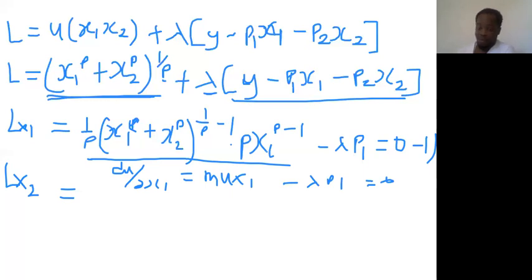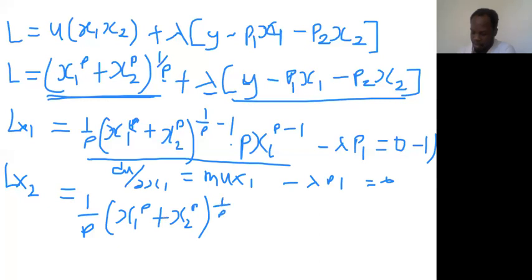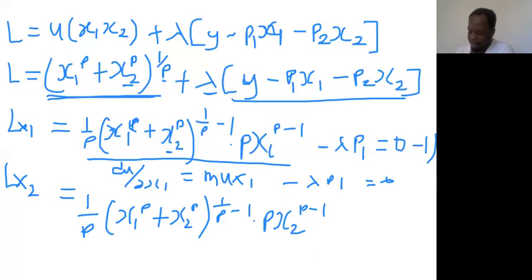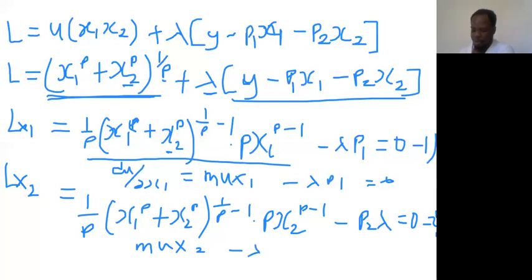Now let's also differentiate with respect to x2, because x2 is another component we do not know. When I differentiate with respect to x2, I'm going to have 1 over phi, in brackets x1 phi plus x2 phi, to the power of 1 over phi minus 1, multiplied by phi x2 to the phi minus 1, then minus lambda p2 equals zero. So this is equation 2. This expression is also the same as marginal utility of x2 minus lambda p2 equals zero.